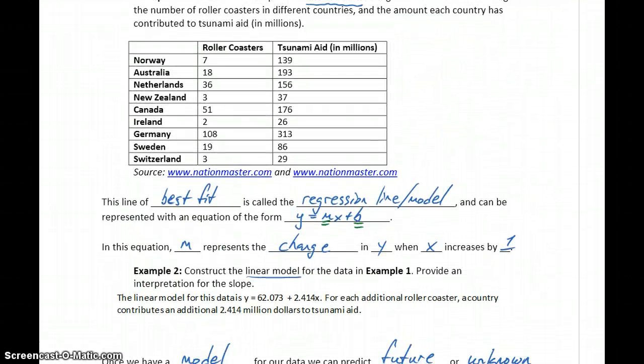So our data set only has values for these specific given countries. We have a country like the Netherlands, that has 36 roller coasters, and $156 million they donate to tsunami aid.